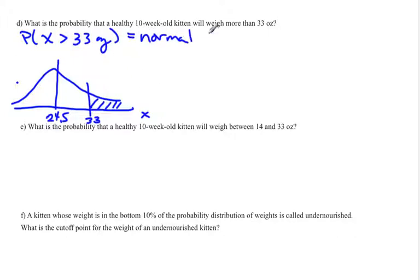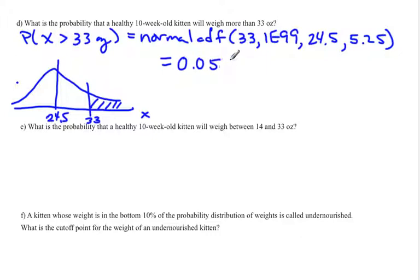Using normal CDF, your shading in this case starts at 33 and ends at infinity. So you put 1e99 for infinity, just a really big number. Your mean was 24.5, and your standard deviation was 5.25. And now you type that into your calculator. And so we start off with the 33, then the 1e99, and then the mean of 24.5, and the standard deviation of 5.25. And there we get a probability of 0.0527.